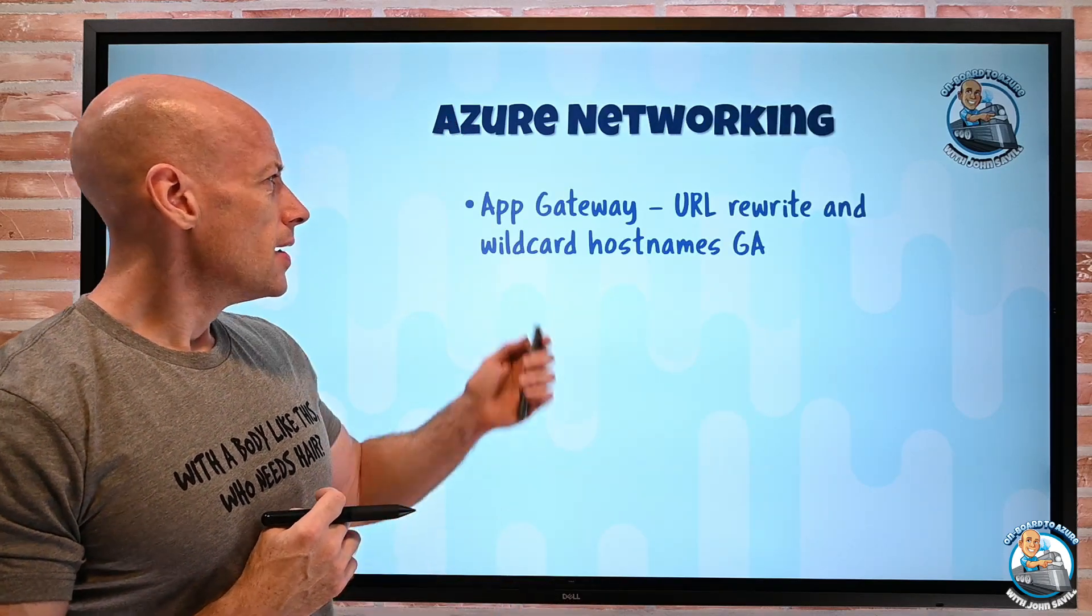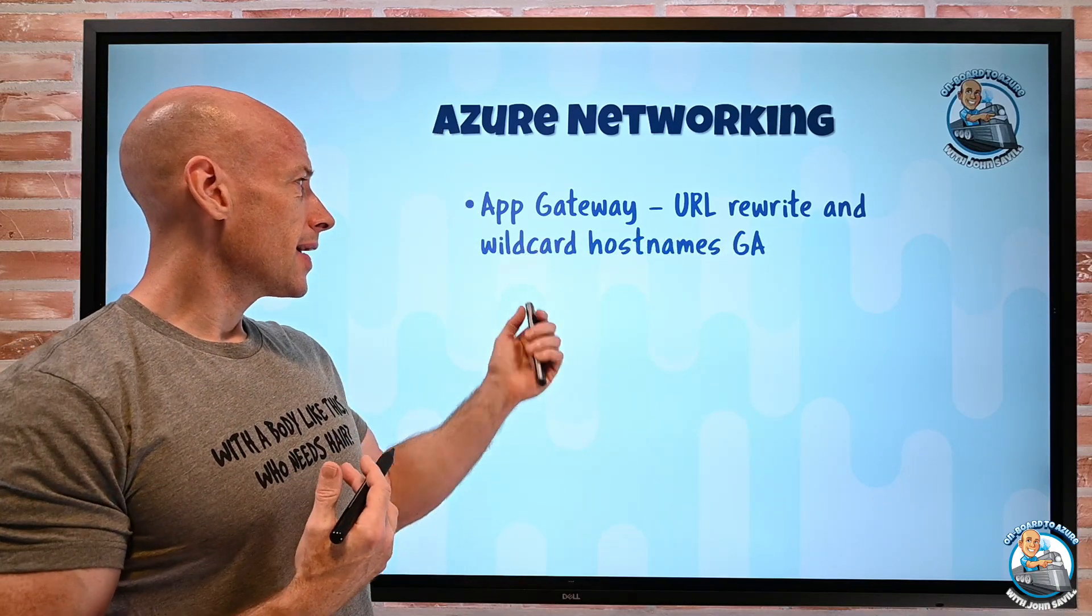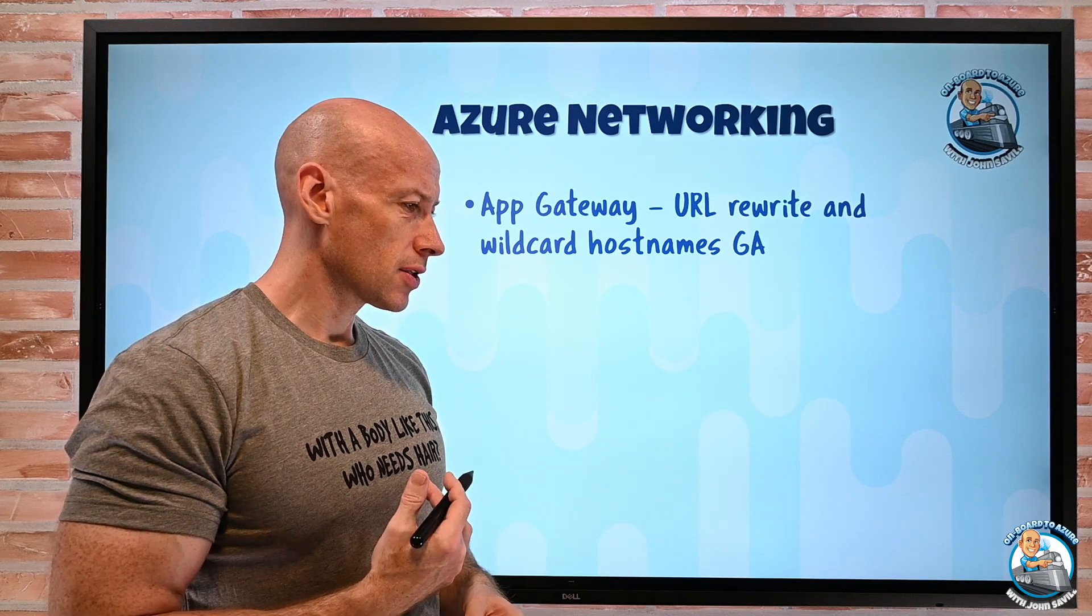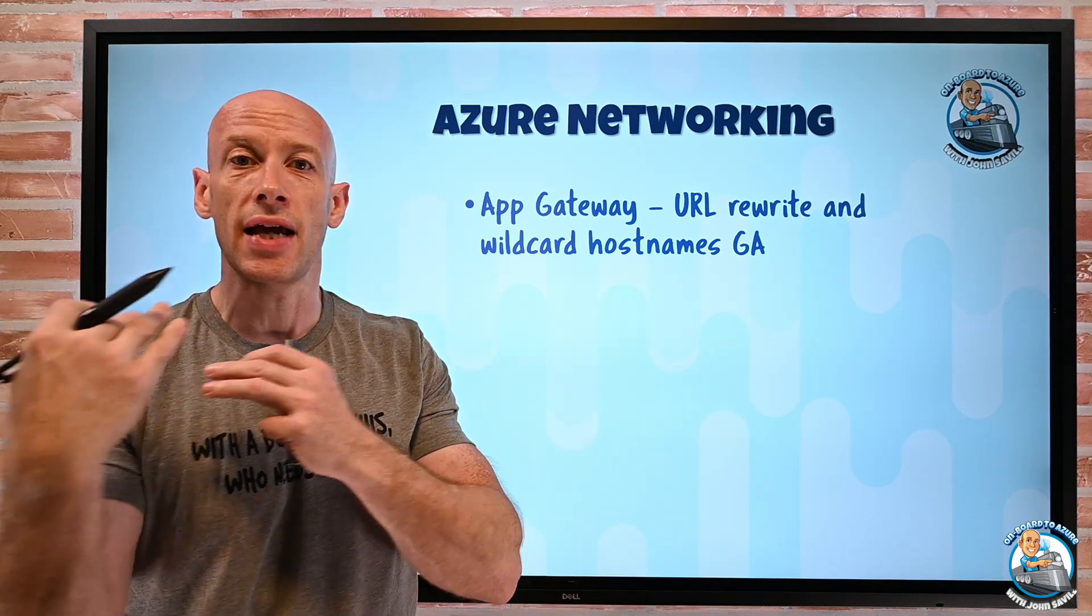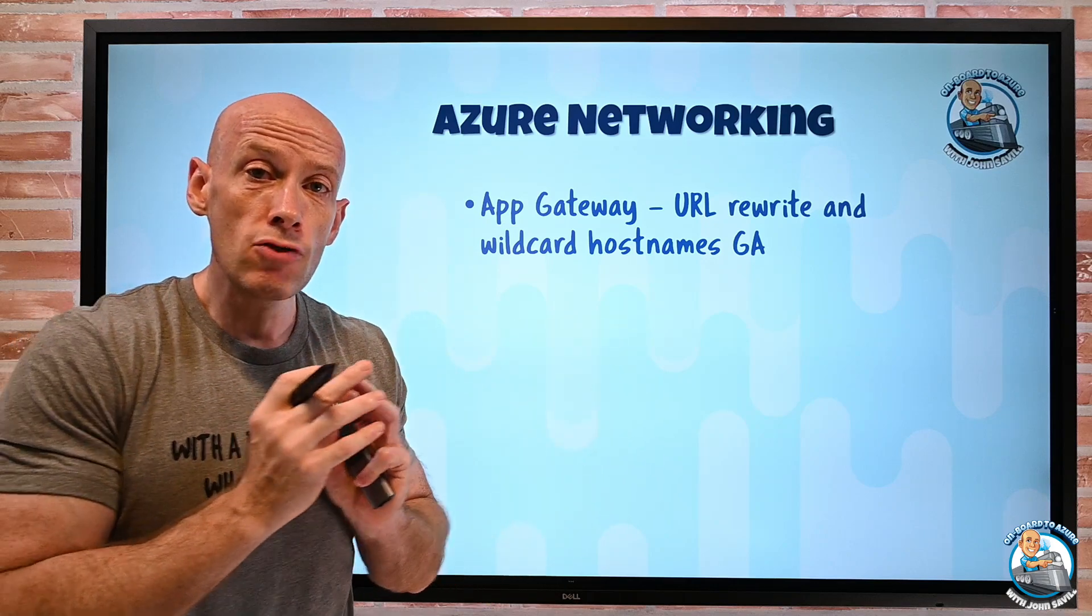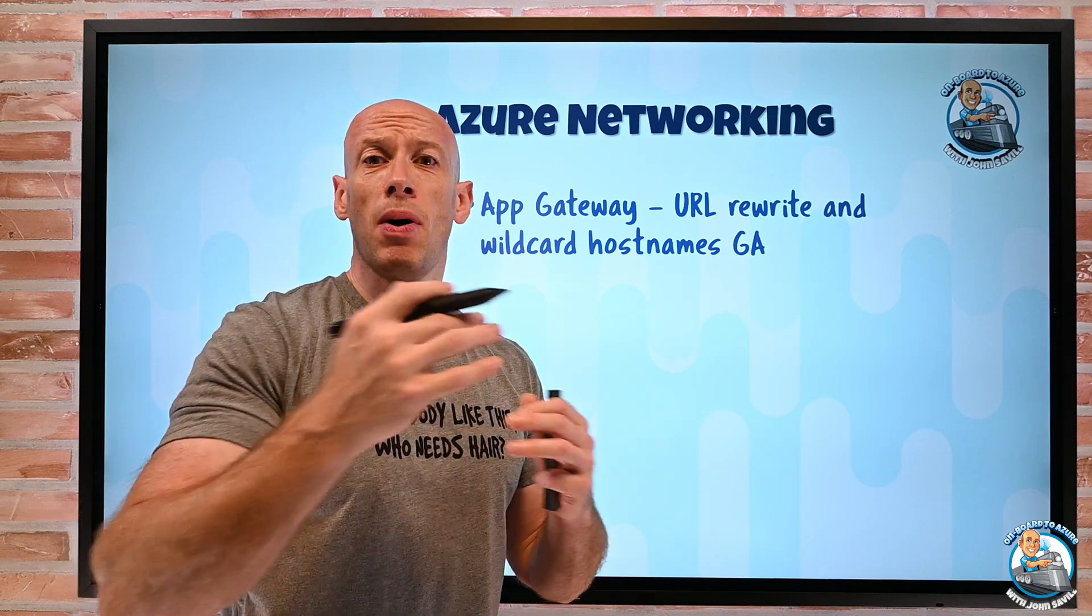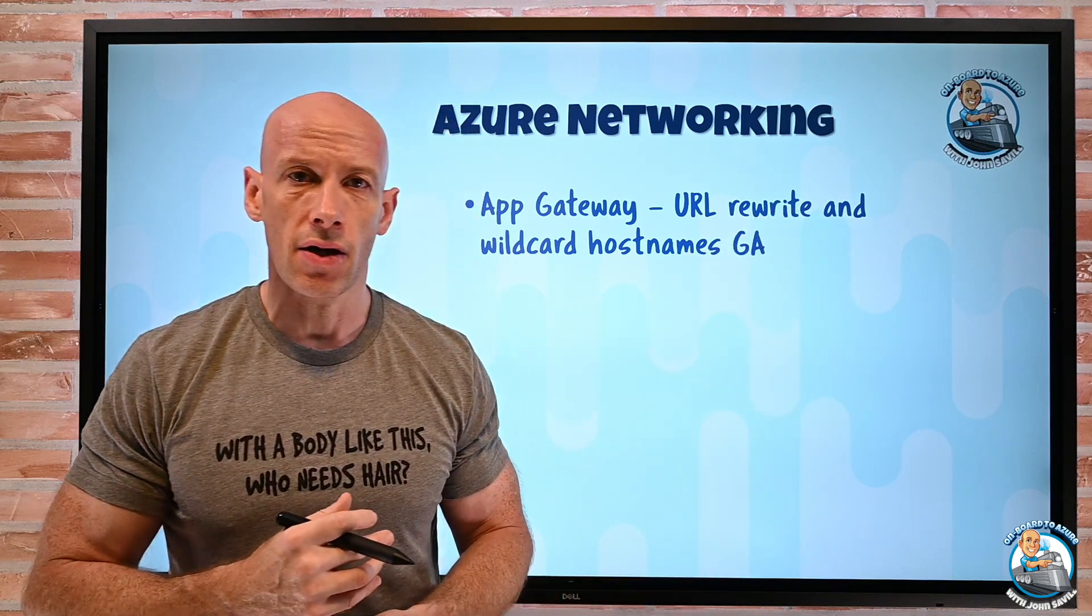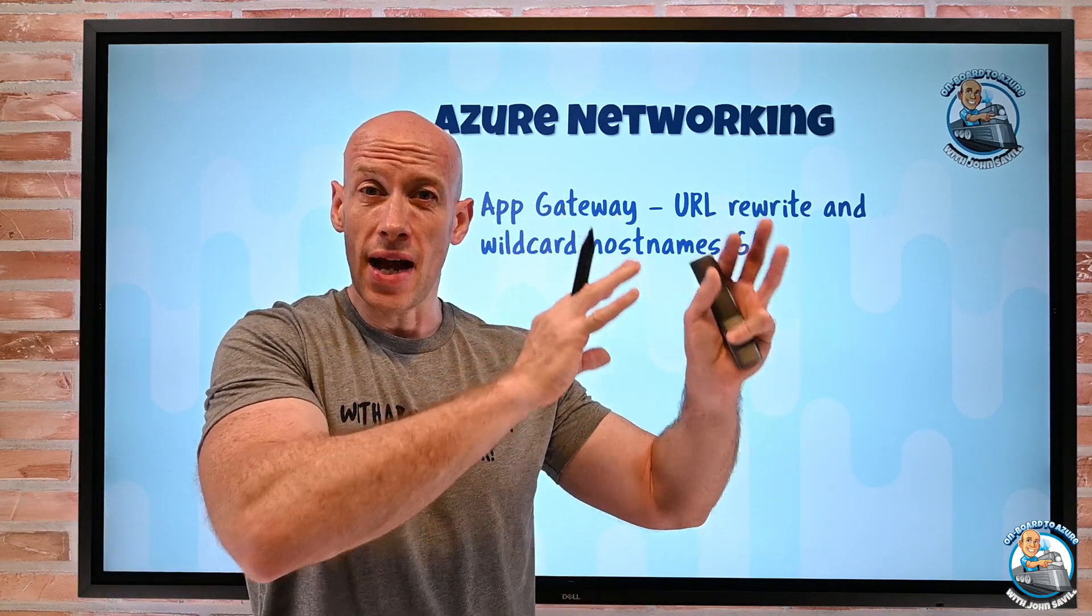On the networking side, App Gateway now supports URL rewrite and wildcard host names. So for the URL rewrite, I could have a name coming in, let's say SavilTech.com. Well I can actually rewrite that to now point to www.saviltech.net/path with these header variables pass through. I can really translate anything that comes in to anything I want on the other side.